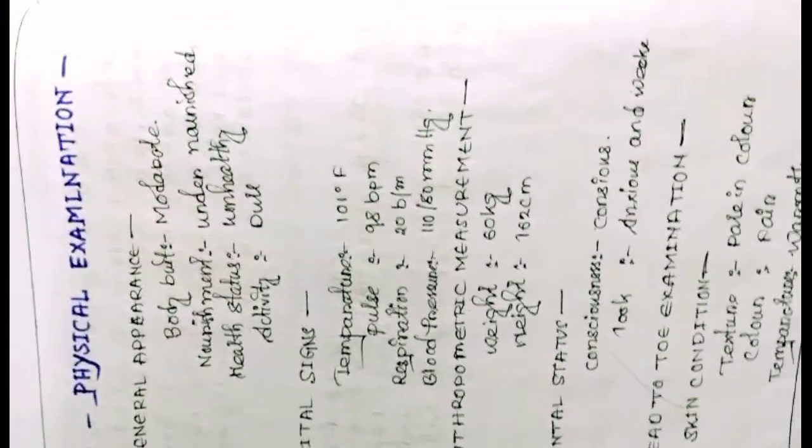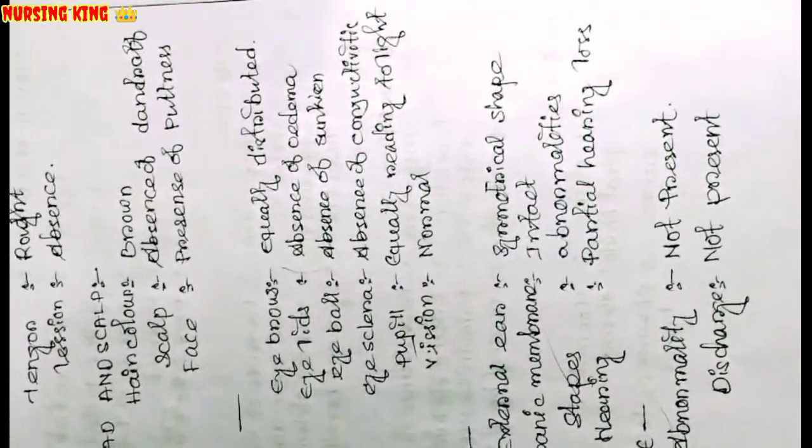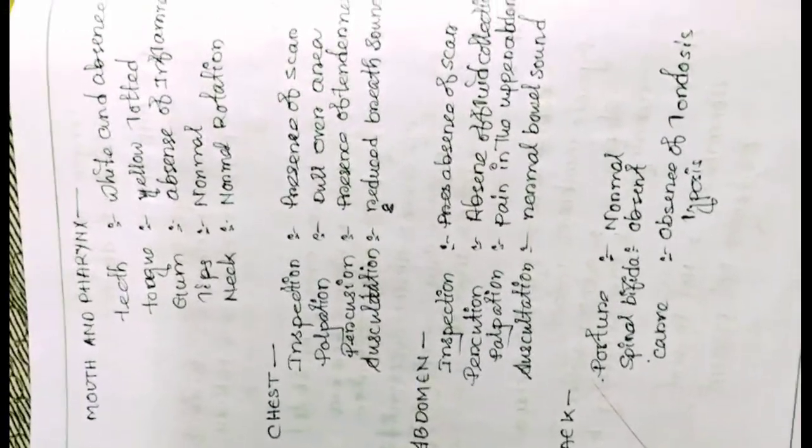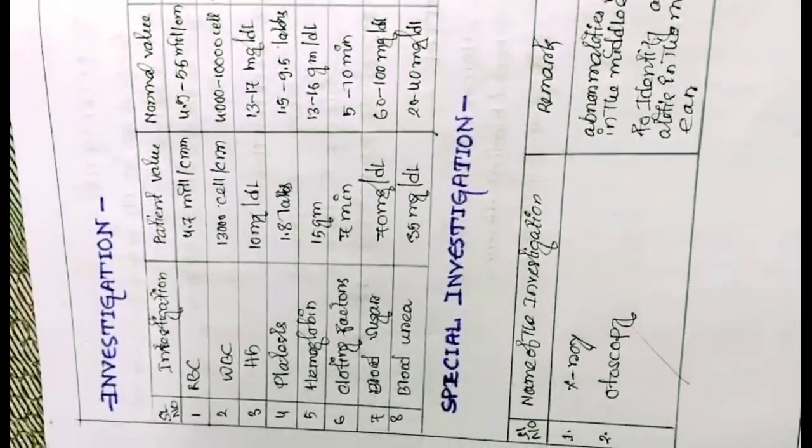After socio-economic history, you have to write physical examination, the head to toe examination like mouth, ear, nose, head and skull, mouth and pharynx, chest, abdomen, upper extremities, lower extremities. If any abnormalities are there, you have to write.